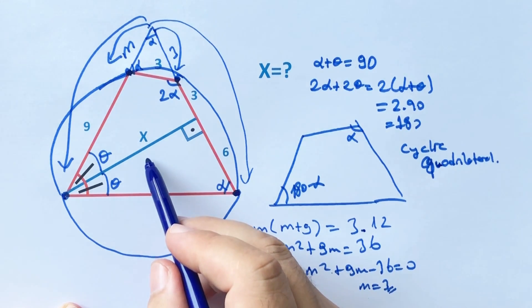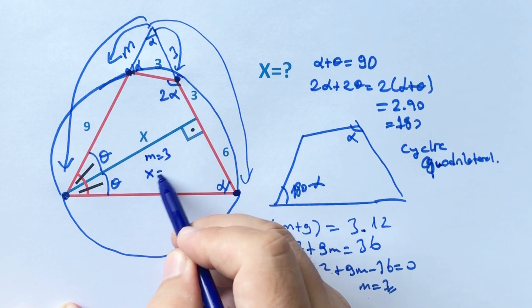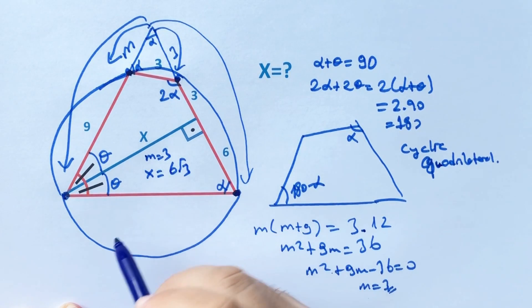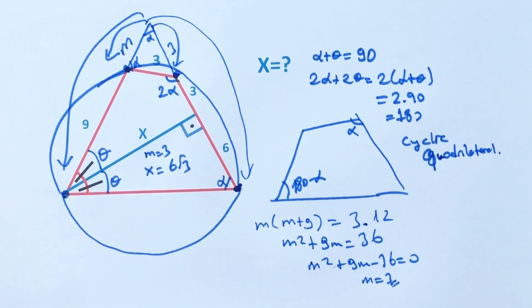So if m equals 3, x equals 6 root 3. Thanks for watching, and if you want more videos like this, please subscribe to my channel.